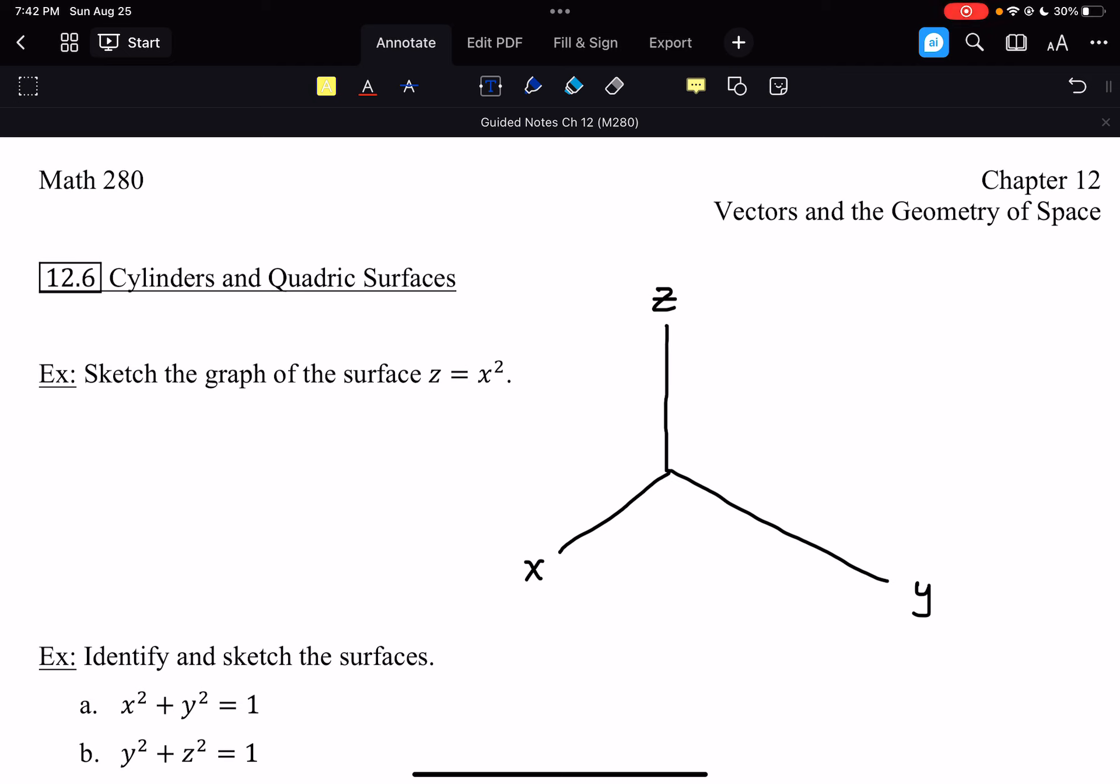So the first example we're going to look at here, sketch the graph of the surface z equals x squared. So first thing to notice in this equation, z and x have a direct relationship. Y is not mentioned here.